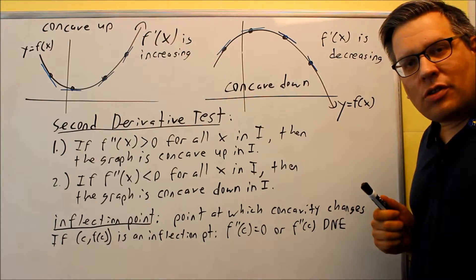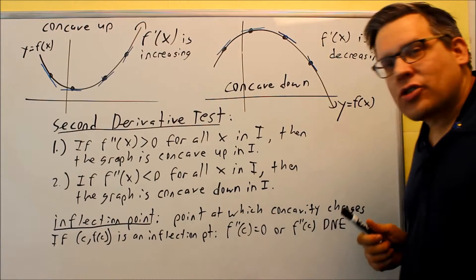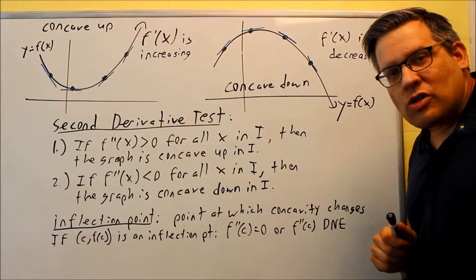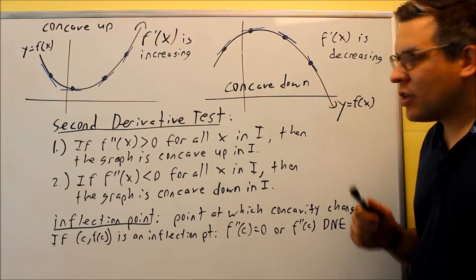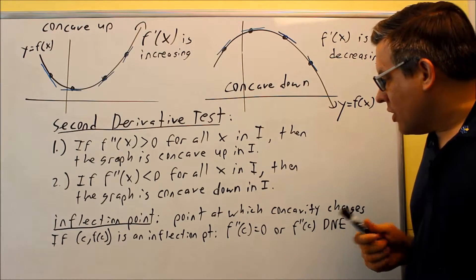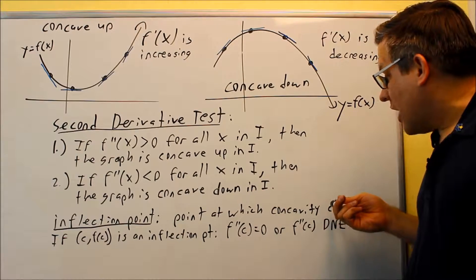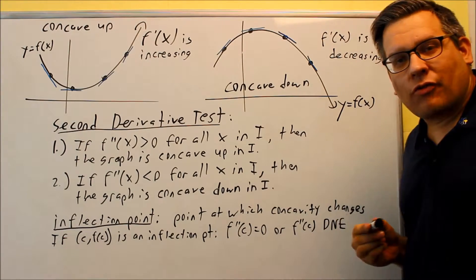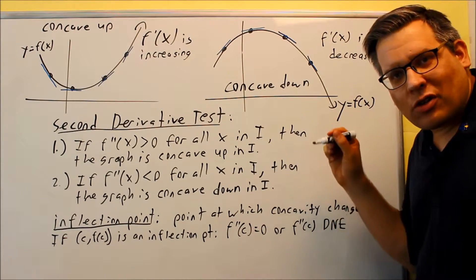Now we have another definition in this section and it's called the inflection point. Now the inflection point is where you see the concavity changing. So it might be changing from concave up to concave down or likewise. So when that concavity changes, then you have what's called an inflection point. So what would the graph look like at that point?